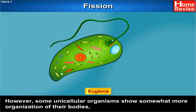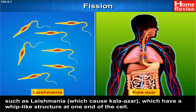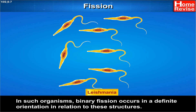However, some unicellular organisms show somewhat more organization of their bodies, such as Leishmania, which causes Kala Azar, and which have a whip-like structure at one end of the cell. In such organisms, binary fission occurs in a definite orientation in relation to these structures.